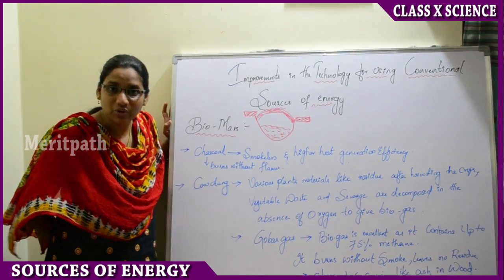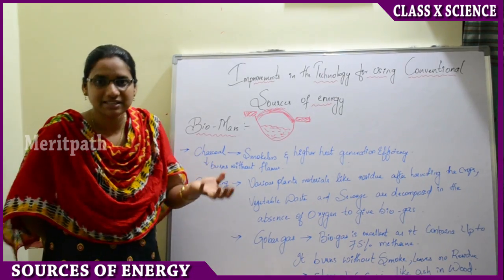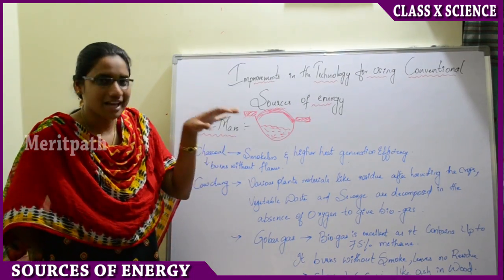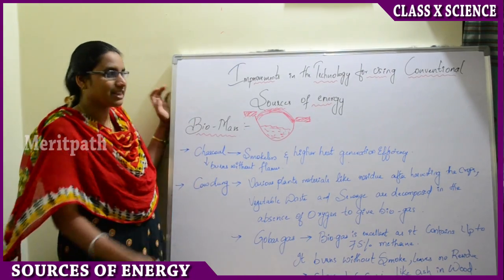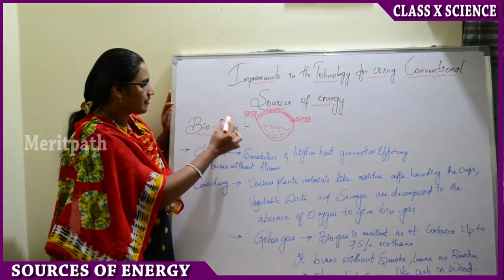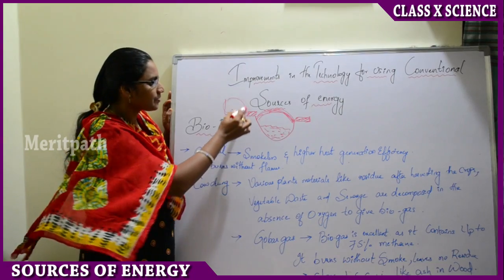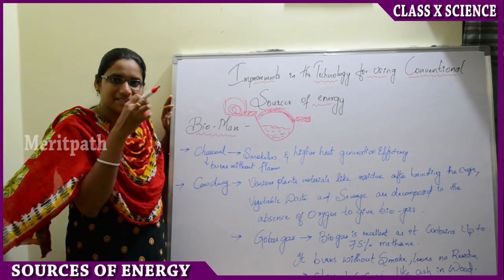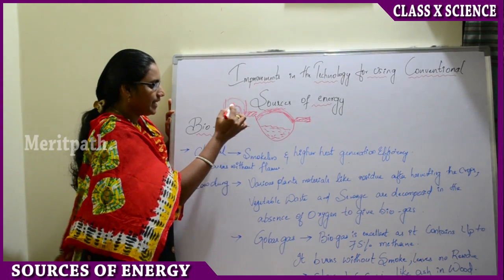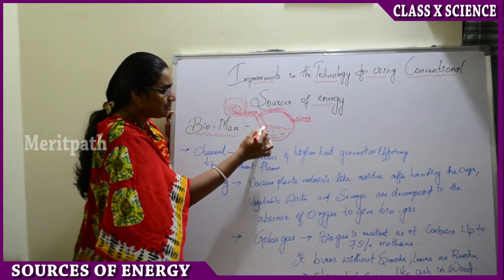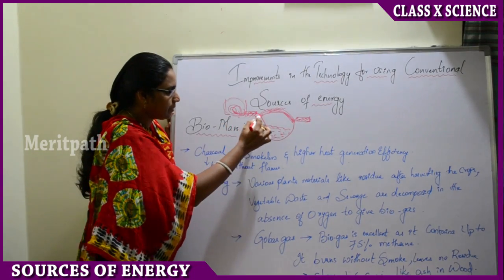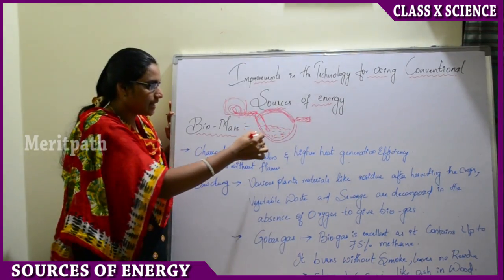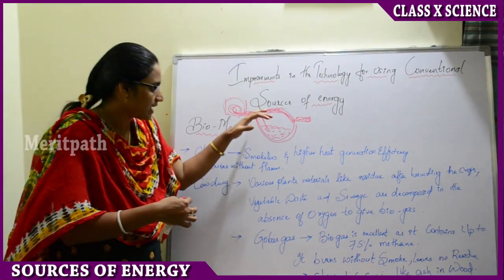Biomass is produced by the decomposition of waste materials like vegetables and sewage, decomposed in the absence of oxygen. For example, cow dung is placed in a first chamber, filtered to remove waste materials, and then passed through a tube or funnel into a hollow underground structure.